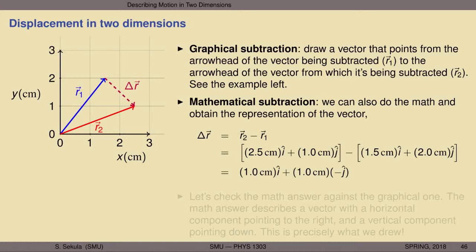We begin by writing down the definition of displacement in more than one dimension: delta r vector equals r2 vector minus r1 vector. From the previous slide, we have the mathematical forms of r2 and r1. We substitute those in, writing out each vector in its full x and y component form, and subtract these two bracketed quantities to represent the subtraction of r1 from r2.